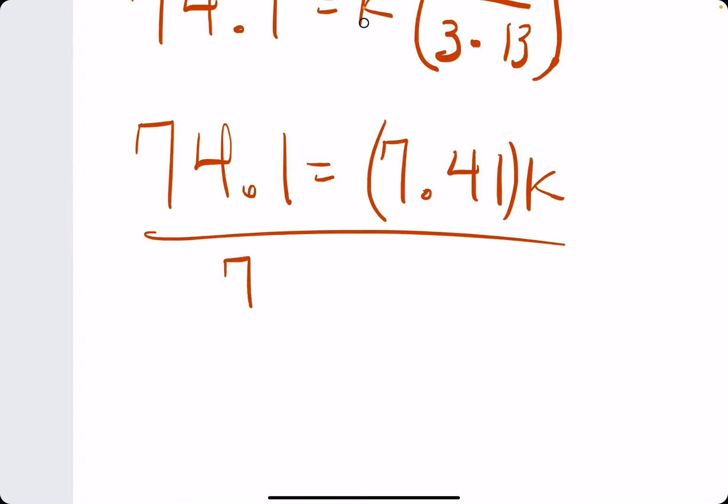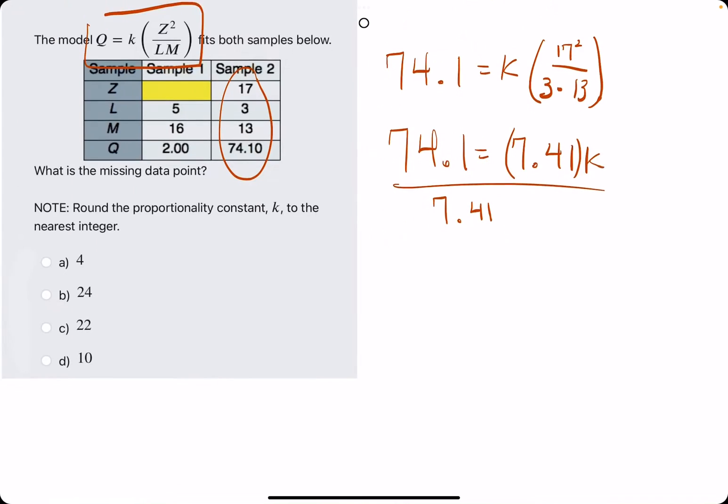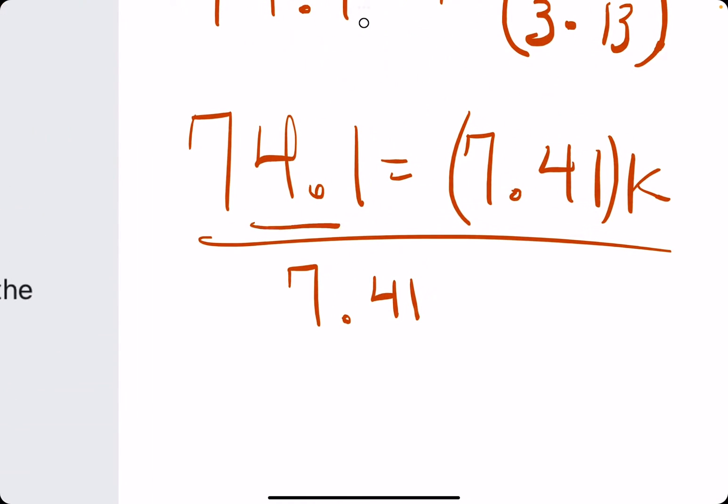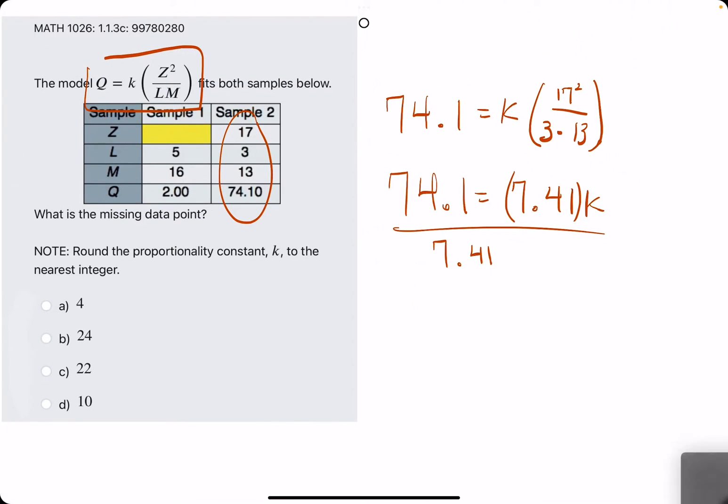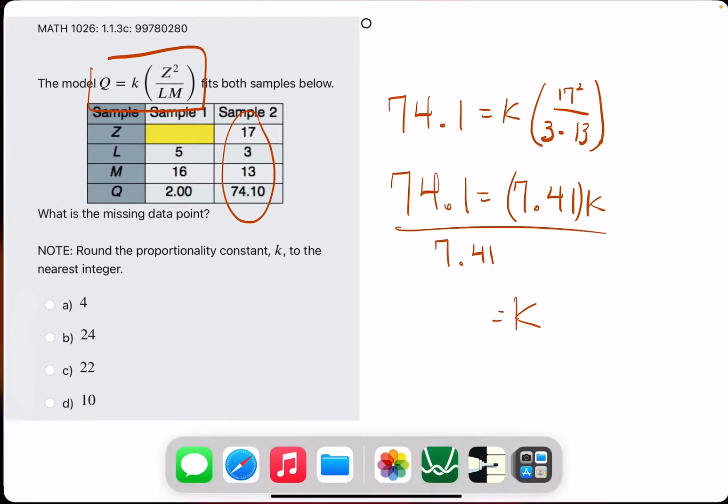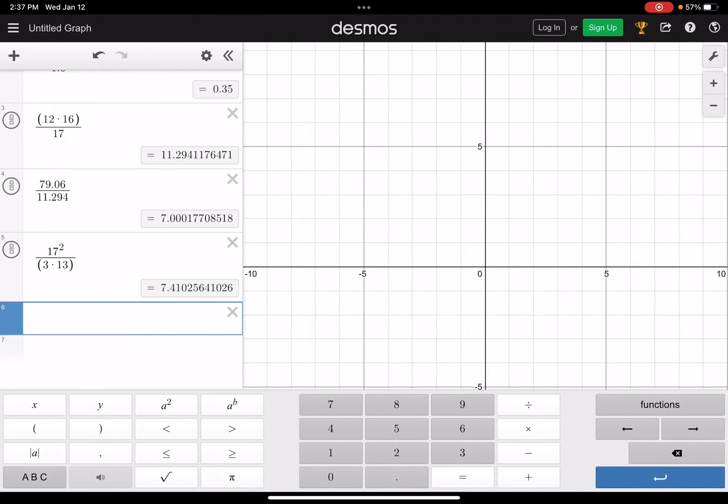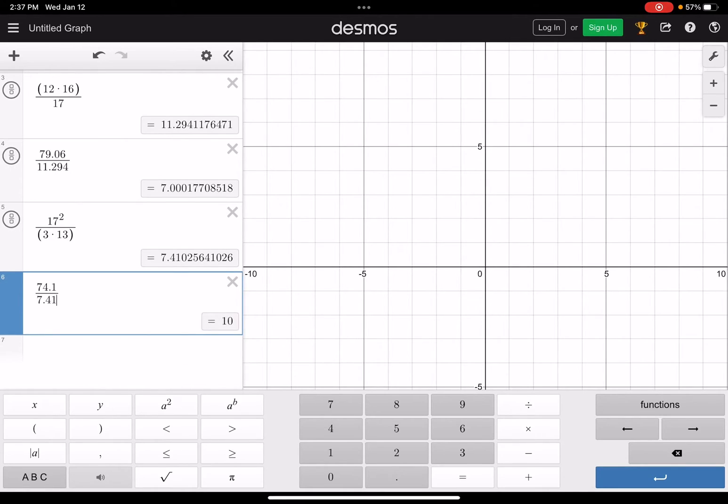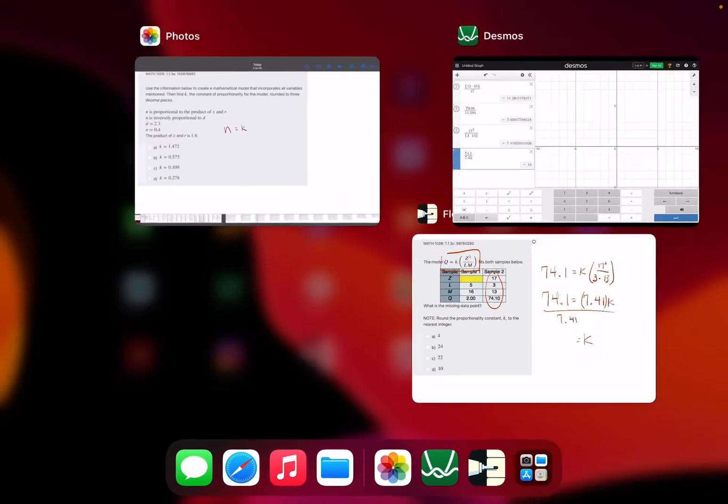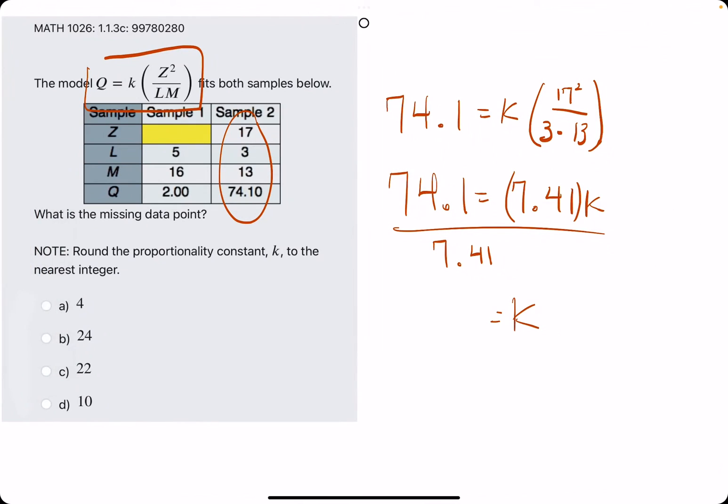we just divide by 7.41. These look similar, and that's because K is likely equal to 10—it's just a decimal shift there. So just to demonstrate, 74.1 divided by 7.41 is 10 exactly. So we have that our K value is equal to 10.